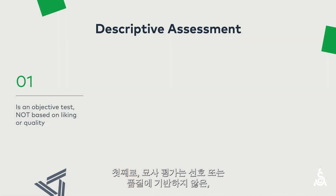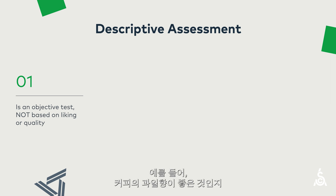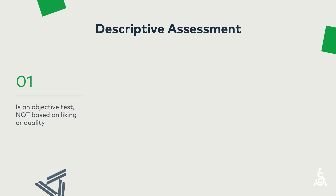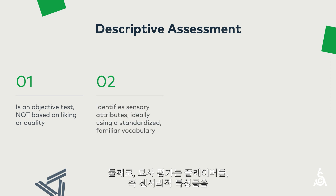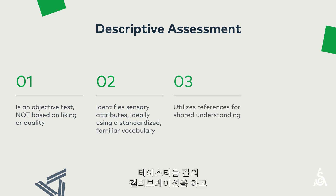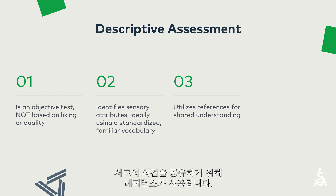Some key things to know about a descriptive assessment. First, it is seen as an objective test, without any basis in liking or quality. As an example, a coffee might be described as fruity, without any judgment of whether fruitiness is a good or bad thing in coffee. Second, it identifies these flavors, also known as sensory attributes, using a standardized familiar vocabulary. It uses references to calibrate testers and create a shared understanding.